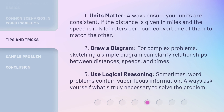A few key tips to keep in mind. First, units matter — always ensure your units are consistent. If the distance is given in miles and the speed is in kilometers per hour, convert one of them to match the other. Second, draw a diagram — for complex problems, sketching a simple diagram can clarify relationships between distances, speeds, and times. Third, use logical reasoning — sometimes word problems contain superfluous information, so always ask yourself what's truly necessary to solve the problem.